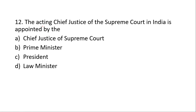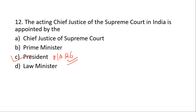The next question is: who appoints the acting Chief Justice of the Supreme Court in India? The President appoints the acting Chief Justice of the Supreme Court under Article 126. When the office of the Chief Justice of India is vacant or when the Chief Justice is unable to perform his duties, the President appoints another judge of the court as the acting Chief Justice.